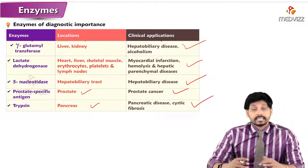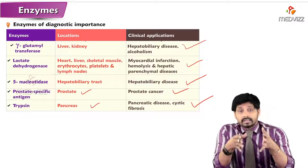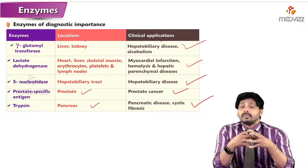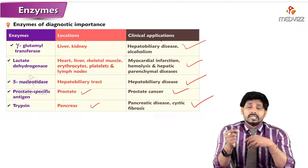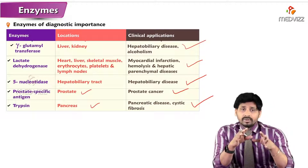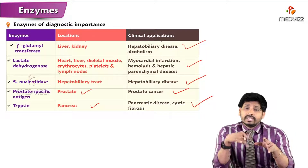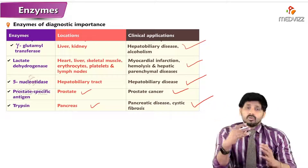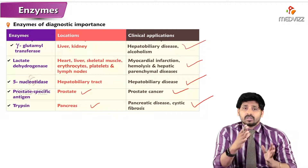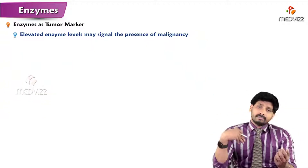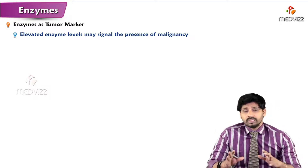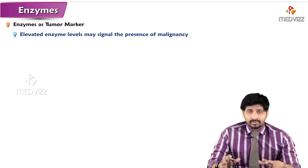Lactate dehydrogenase is for myocardial infarction, 5-nucleotidase for hepatobiliary disease, prostate-specific antigen for prostate cancer, and trypsin from the pancreas for pancreatic diseases and cystic fibrosis. All these are plasma non-specific enzymes — not present regularly in plasma, but detectable in normal low levels due to everyday cell wear and tear. In disease conditions their levels rise, allowing diagnosis of disorders and malignancies.